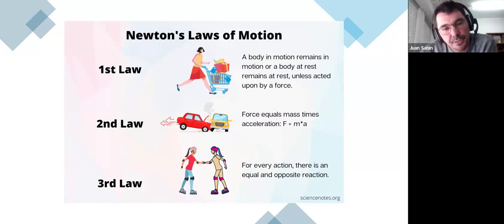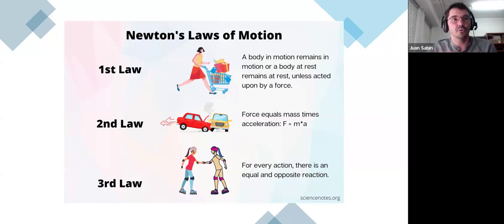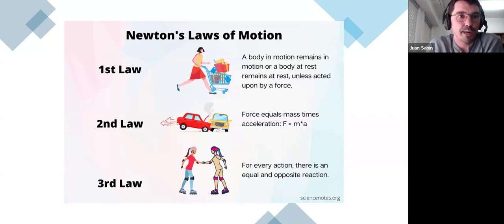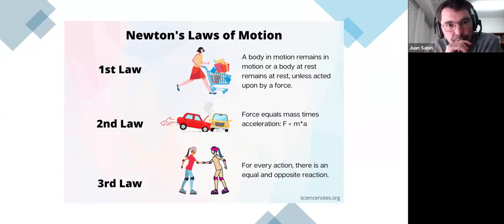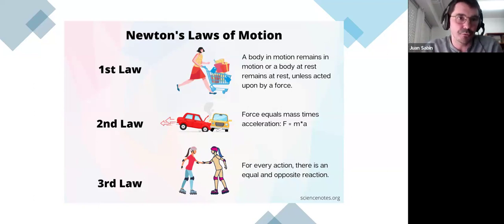If you look at physics textbooks for secondary students, you see repeatedly the same kinds of examples to teach the third law: a person jumping out of a boat moves the boat backwards, or a pipe with water pushes back on you. We see a problem here because always using the same examples makes it seem like the third law only applies to those specific cases. The very important thing is that the third law applies always — every single force in nature has an equal and opposite force.